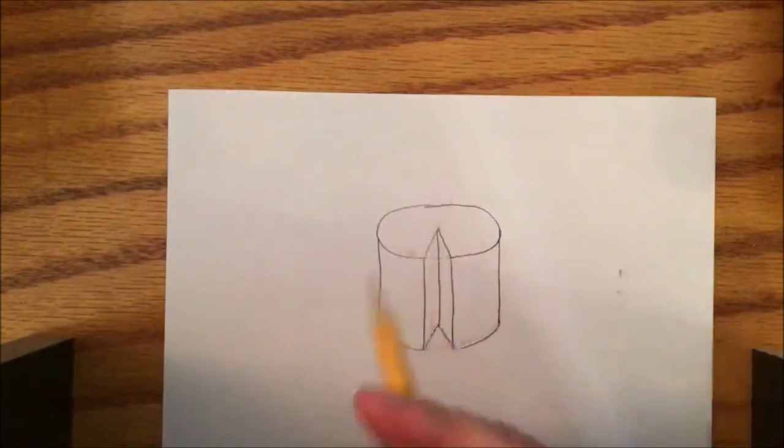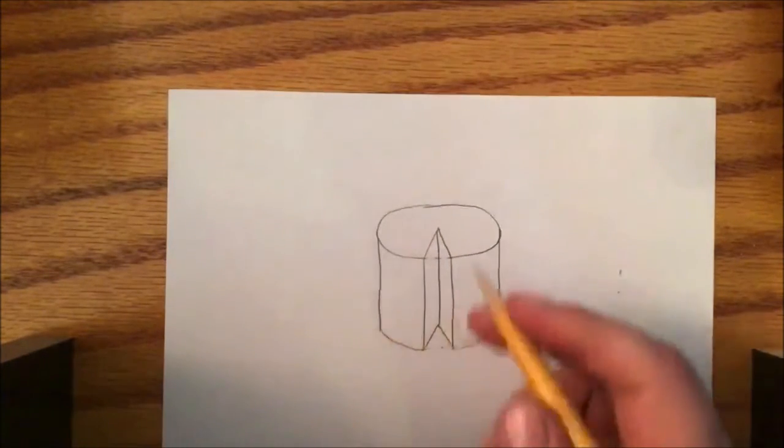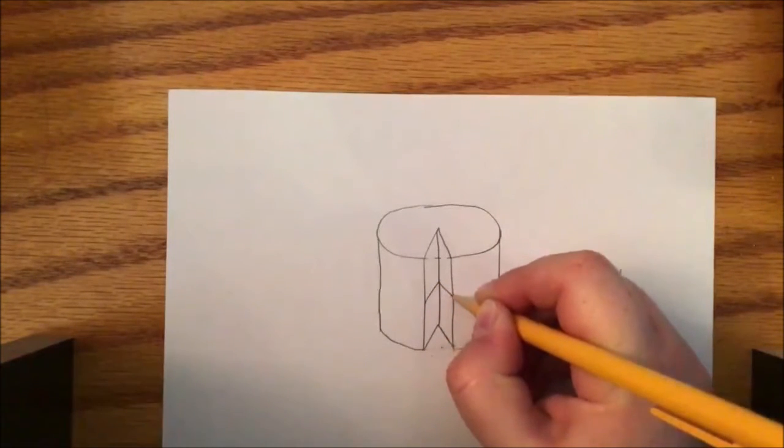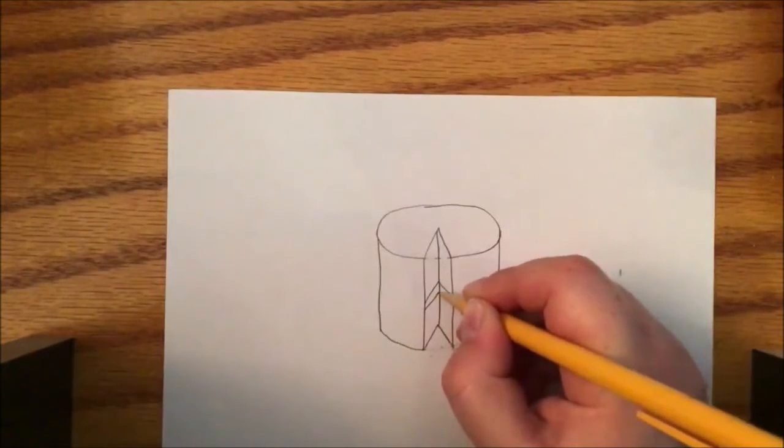Then, we can start decorating our cake. If you want to have frosting on the inside, you want to do another kind of triangle shape. Up, down, up, down.